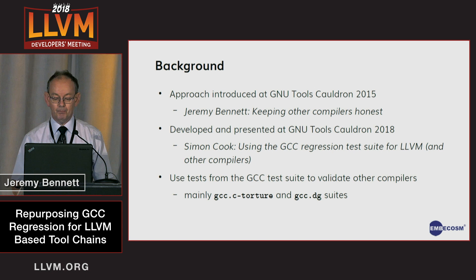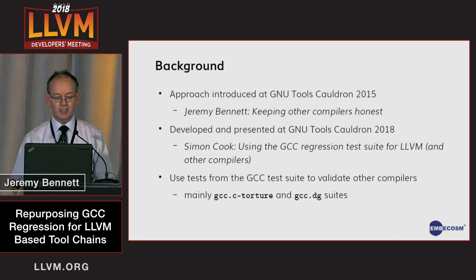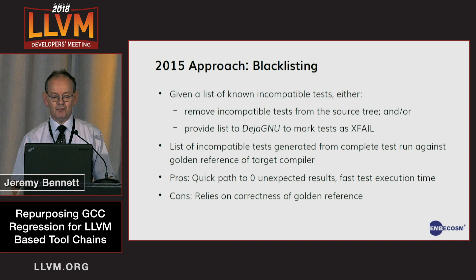We're using the tests from the GCC test suite to validate compilers other than GCC, not just LLVM. And at this stage, we're mainly using the GCC C Torture and GCC DG test suites, which are the two main general purpose execution test suites. When I first looked at this in 2015, we took the approach of trying to use blacklisting just to get rid of tests that were a problem.